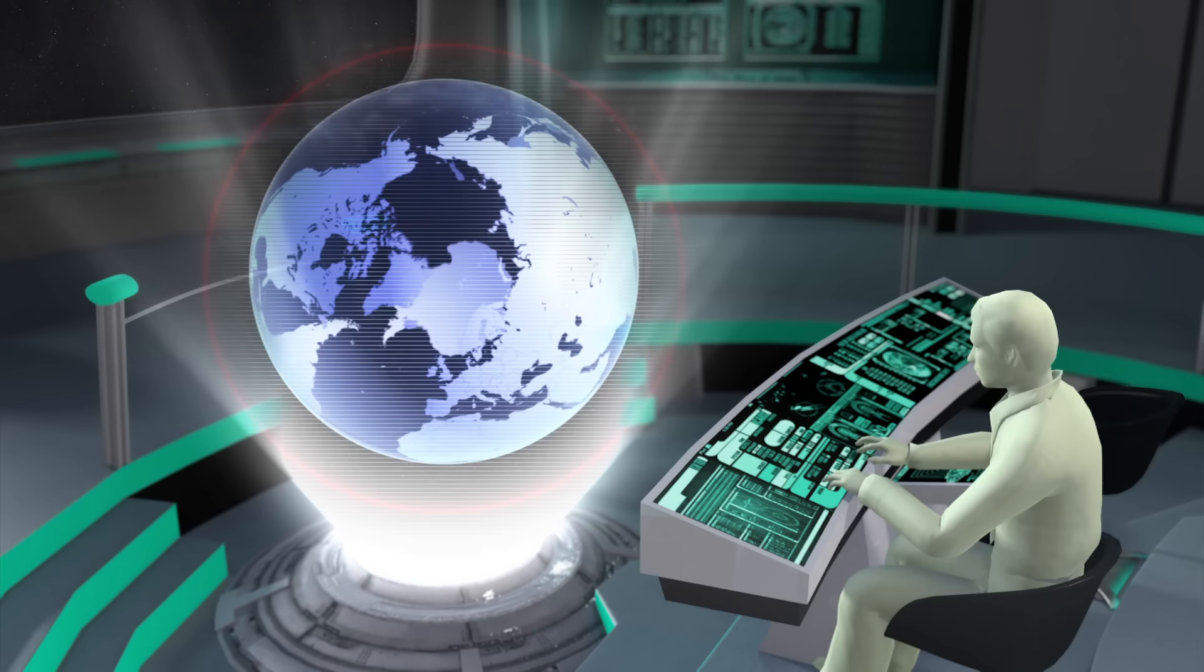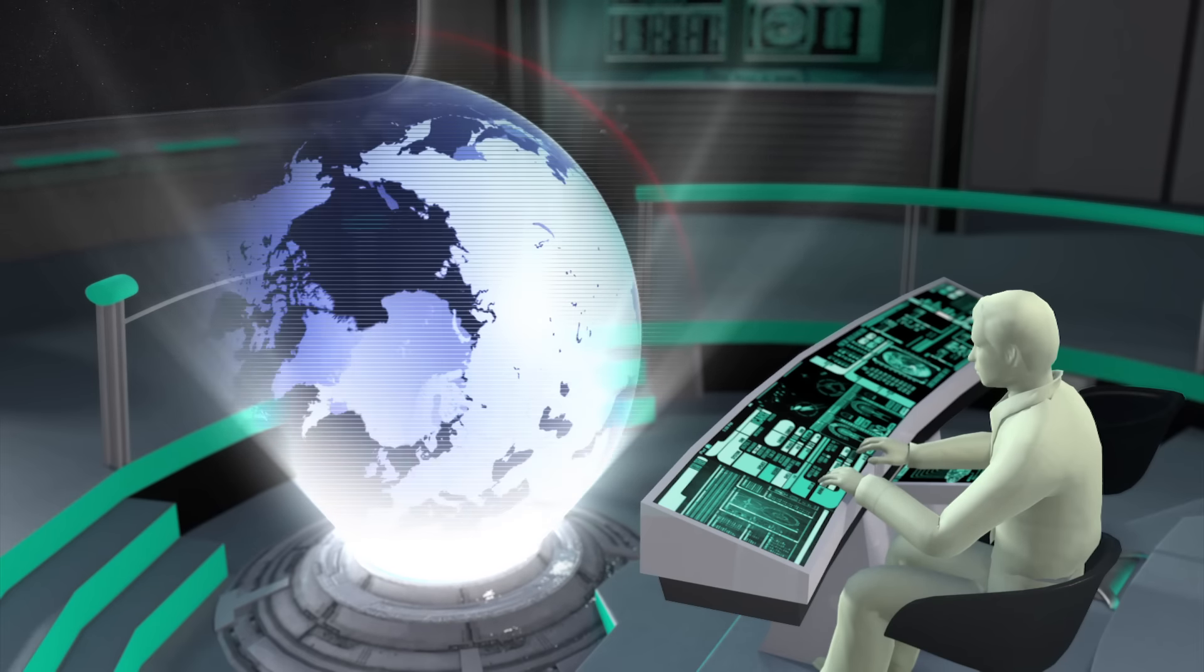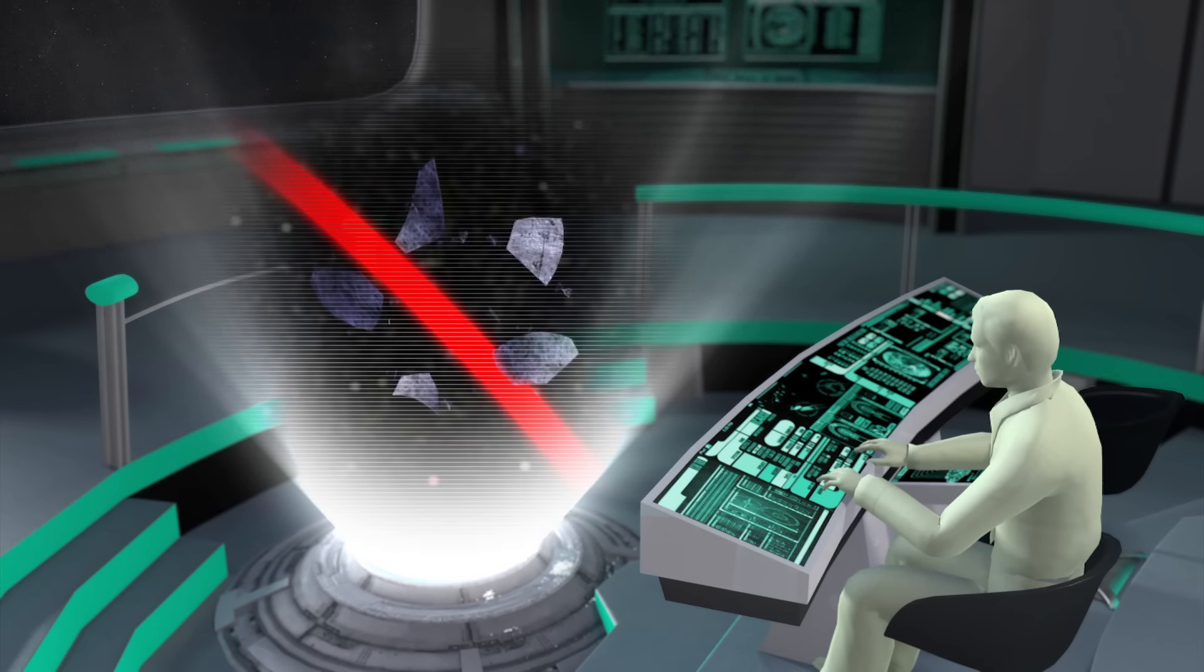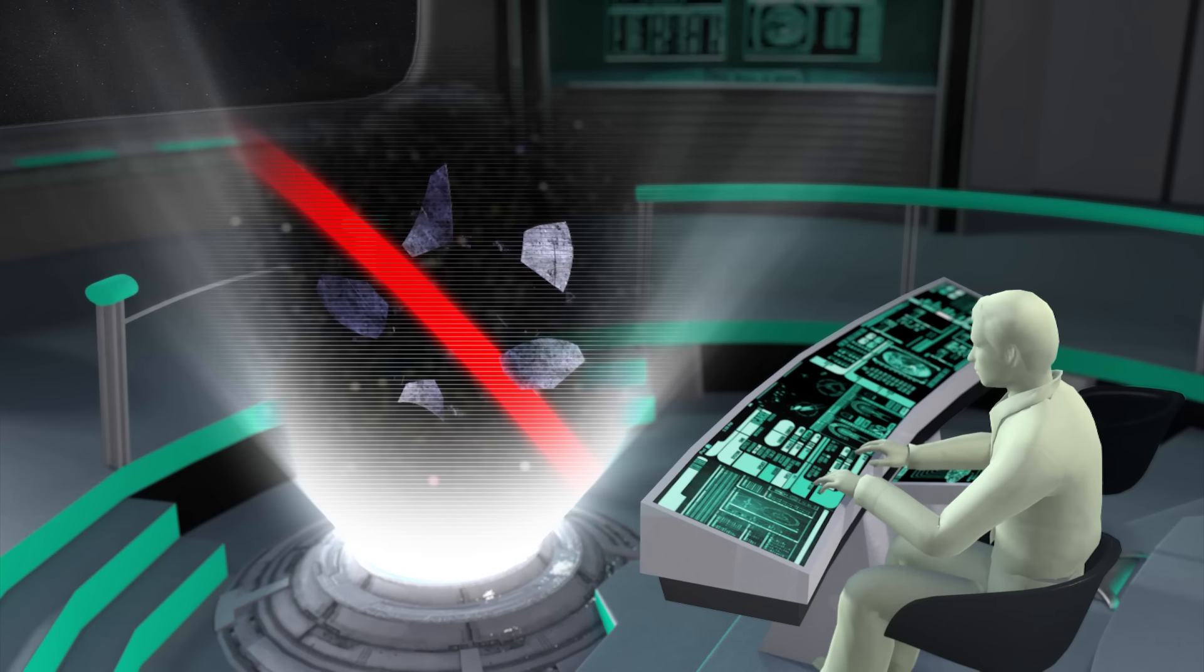The U.S. Joint Space Operations Center reported seeing five objects in the same orbit as Astro-H, which has led to the conclusion that the satellite may have broken up.